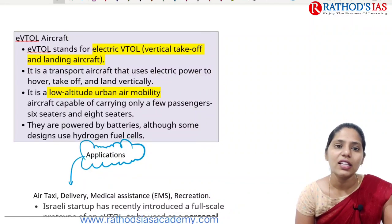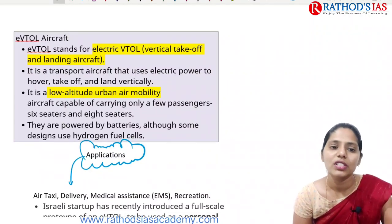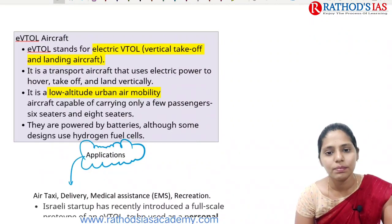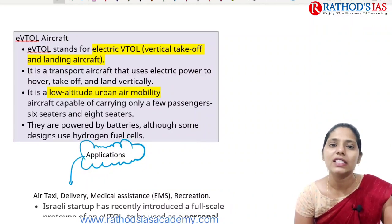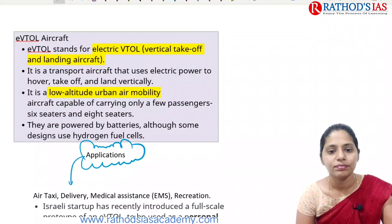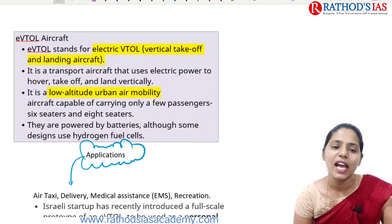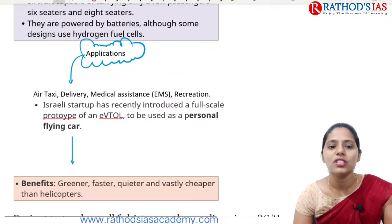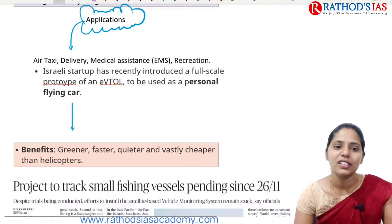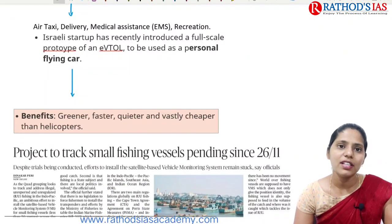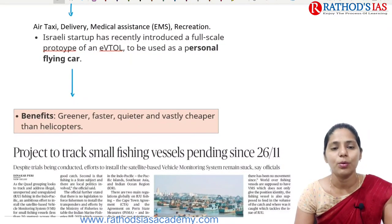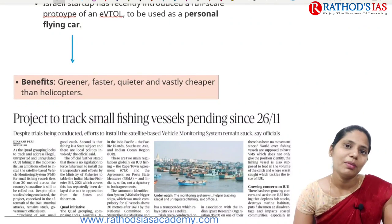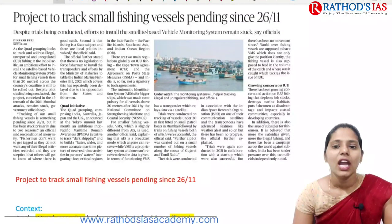eVTOL stands for Electric Vertical Takeoff and Landing. It is a transport aircraft using electric power to hover, take off, and land vertically — a low-altitude urban air mobility aircraft. It has capacity for 6 to 8 passengers and is powered by batteries or hydrogen fuel cells. Applications include air taxis, delivery, medical assistance, and recreation. Benefits include being greener, faster, quieter, and vastly cheaper than helicopters.